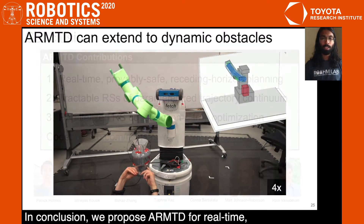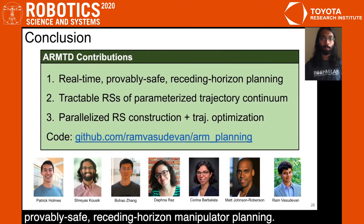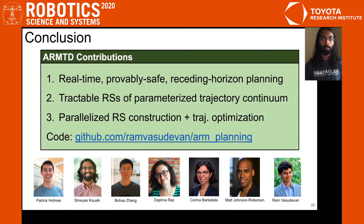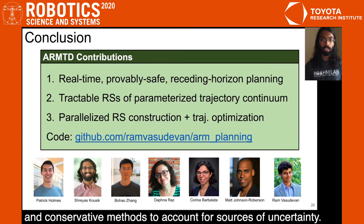In conclusion, we propose ARM2D for real-time, provably safe, receding horizon manipulator planning. For future work, we will consider dynamic obstacles and conservative methods to account for sources of uncertainty.